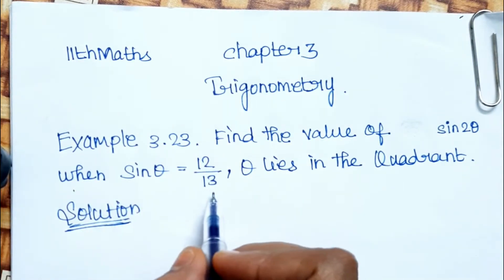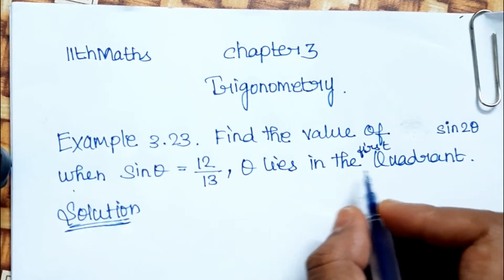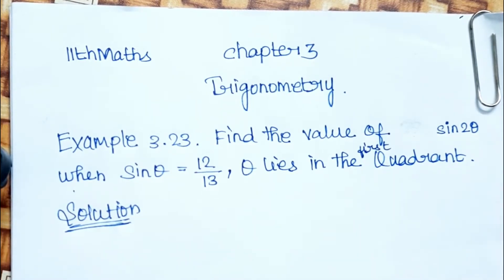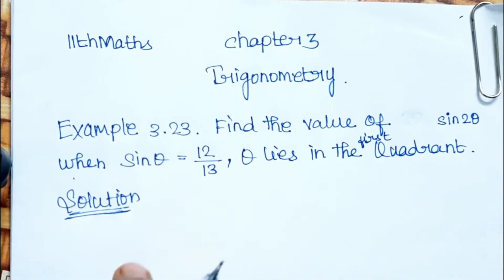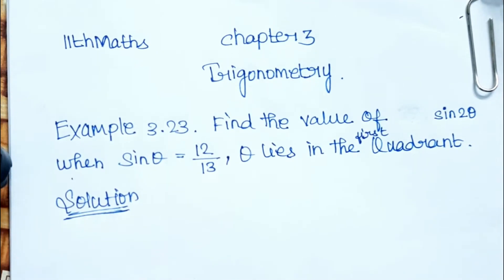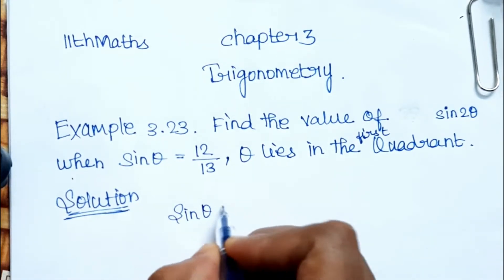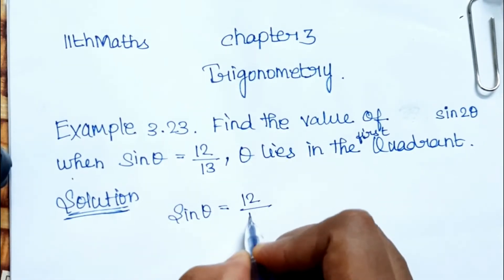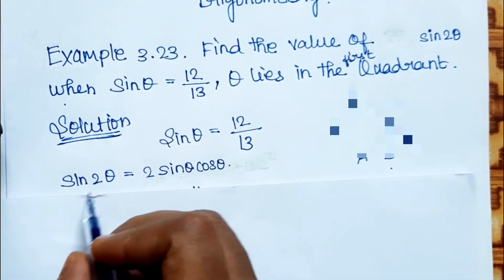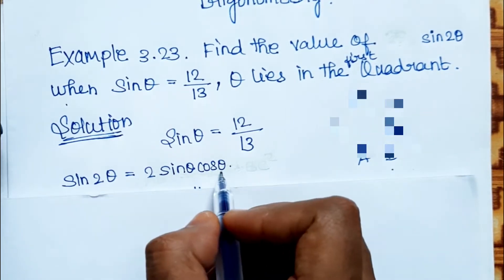...sin θ is equal to 12/13 and θ lies in the first quadrant. Since the first quadrant is positive, we can identify the values. sin θ is given as 12/13. For sin2θ, the formula is: sin2θ = 2 sinθ cosθ.